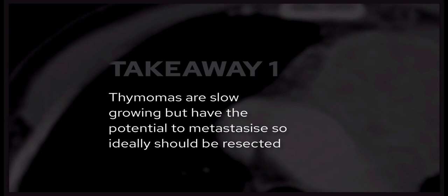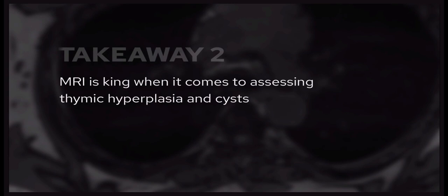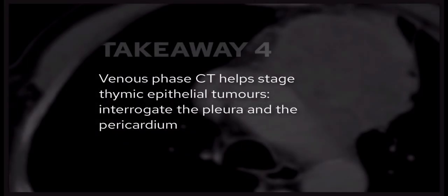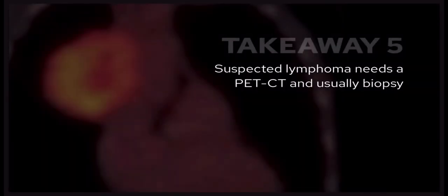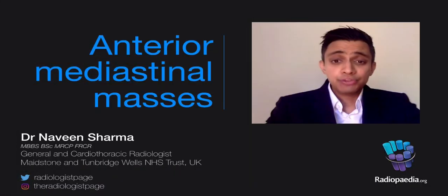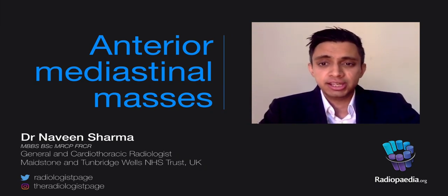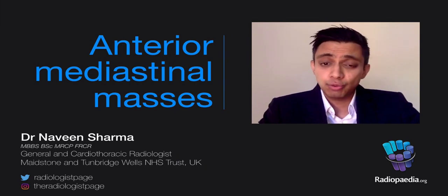Five takeaways. First, thymomas are slow growing but have the potential to metastasize, so ideally should be resected. Second, MRI is key when assessing thymic hyperplasia and cysts. Third, a homogeneous or slightly heterogeneous prevascular mass above the age of 40 is likely a thymoma. Fourth, venous phase CT helps stage thymic epithelial tumors — interrogate the pleura and pericardium as this is where these like to spread. Fifth, suspected lymphoma needs PET-CT for staging and tissue biopsy. Thanks again to Radiopaedia.